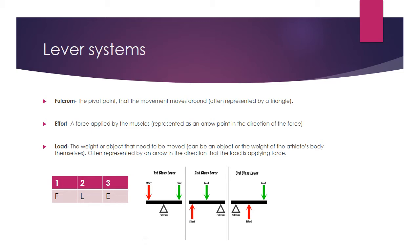We've got the effort, which is the force applied by the muscles, usually represented as an arrow in the direction that the force is being applied. And we've got the load, which is the weight or object that needs to be moved. Just note that this can also be the weight of the athlete's body themselves, especially when looking at the ankle joints. Again, this is represented by an arrow in the direction that the load is applying the force.